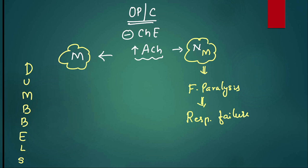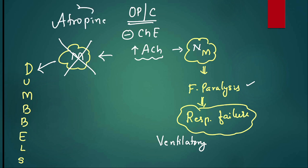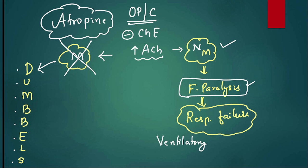For any OP poisoning patient, manage airway, breathing, circulation, gastric lavage. Due to respiratory failure, the patient is placed on mechanical ventilation to address muscle paralysis. For muscarinic actions — diarrhea, urination, miosis and all — atropine is given. Atropine blocks all muscarinic receptors, so it is the antidote for OP poisoning. Atropine reverses diarrhea, urination, miosis, bradycardia, bronchoconstriction, emesis, lacrimation, secretions. However, atropine cannot work on NM receptors, so muscle paralysis or muscle weakness cannot be reversed.